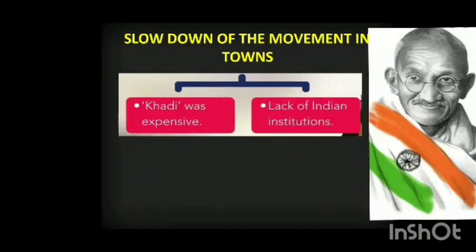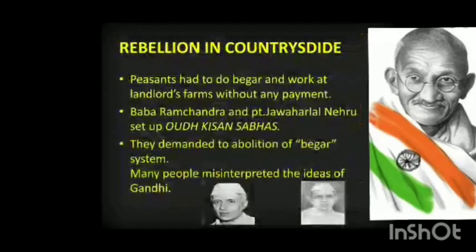However, the movement slowed down for two reasons: khadi was very expensive so poor people could not buy it, and there were no alternative institutions for students and teachers. Slowly, teachers rejoined government schools and lawyers returned to courts.